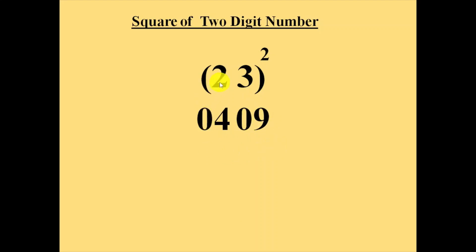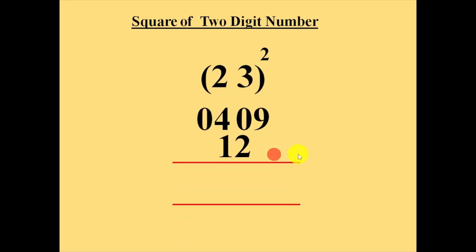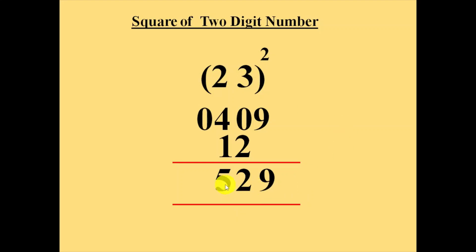Then we will multiply 2 with 3 and that result we will multiply again with 2. 2 into 3 is 6, and 6 into 2 is 12. We will leave this number 9 and write that 12 below this like this. Then we will add these two lines. 9 plus 0 is 9, 2 plus 0 is 2, 4 plus 1 is 5. So the square of the number 23 is 529.